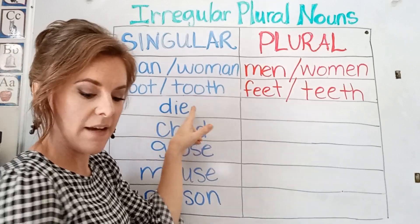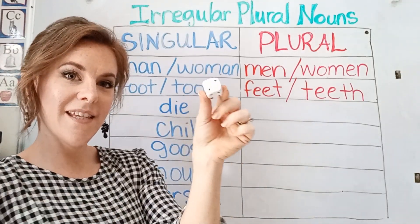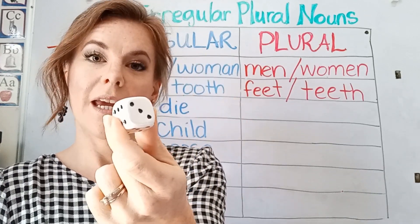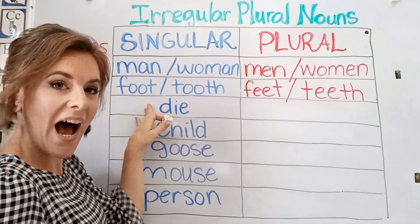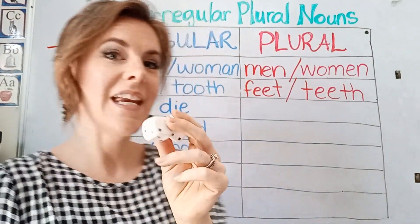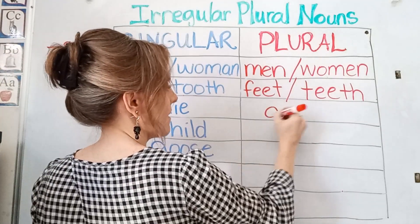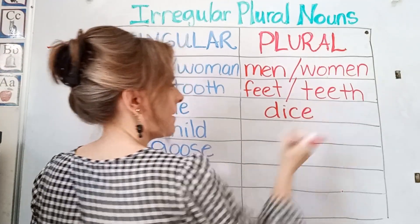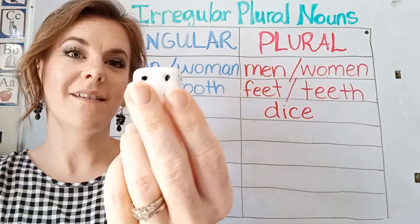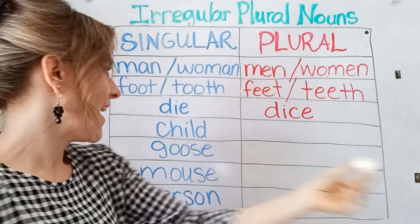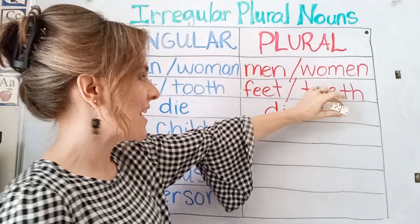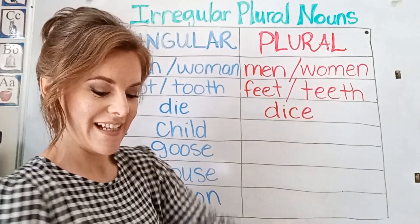And then here we have die — this kind of die. When you only have one, it is called a die. When you have two, it is dice. You put a C in there. So one is die, two is dice.